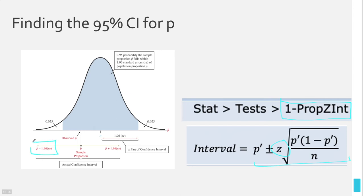Some textbooks use a hat (caret symbol) instead of the prime apostrophe — so p-hat instead of p-prime. The formula is p-hat minus 1.96 times the standard error, to p-hat plus 1.96 times the standard error, giving you the confidence interval. But if you want to save a lot of time, use the 1-PropZInt calculator function.